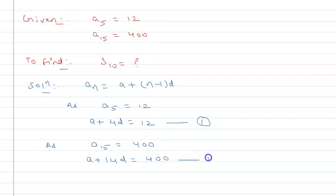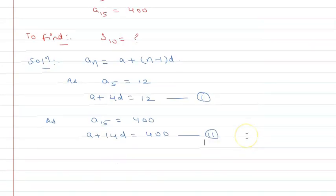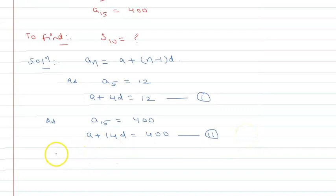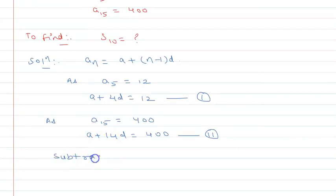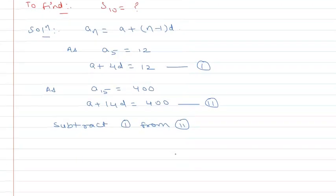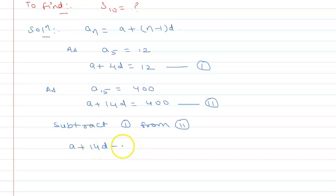So this is equation 2. Now if we subtract equation 1 from 2, we will get a plus 14d minus a minus 4d equal to 400 minus 12, which is a cancel, 14 minus 4 is 10d, and this is 400 minus 12, that is 388.